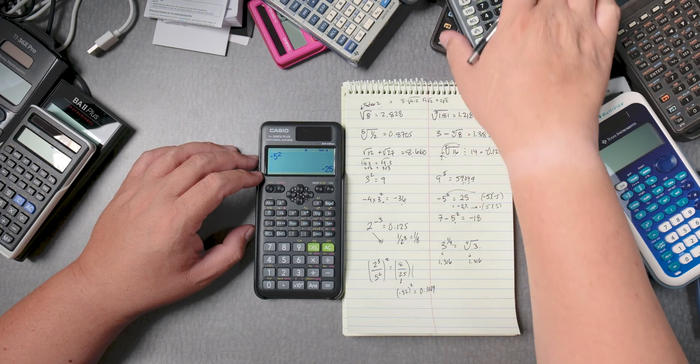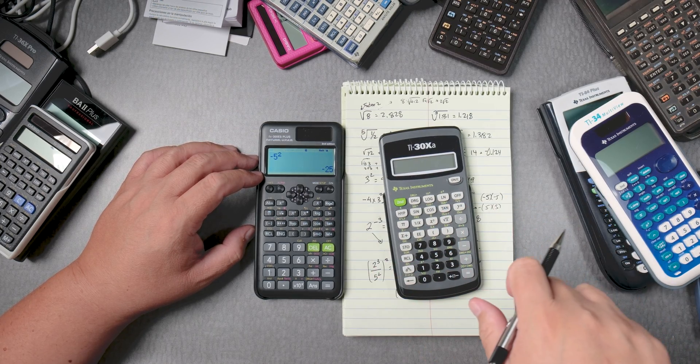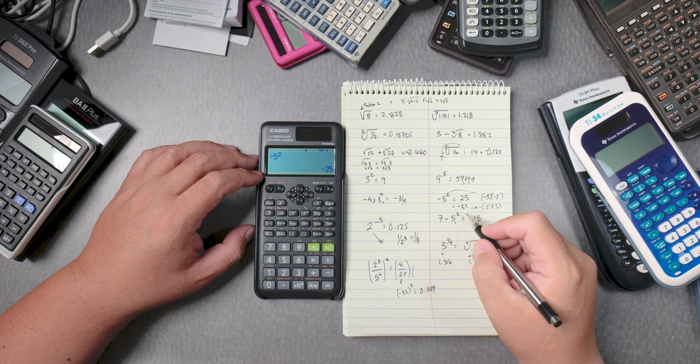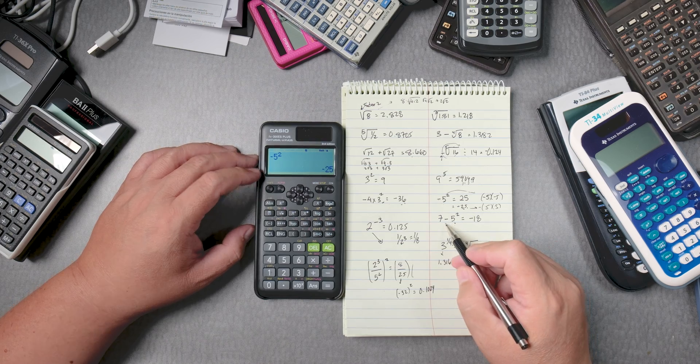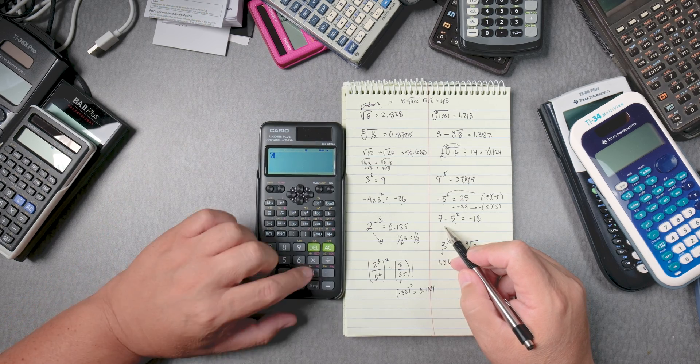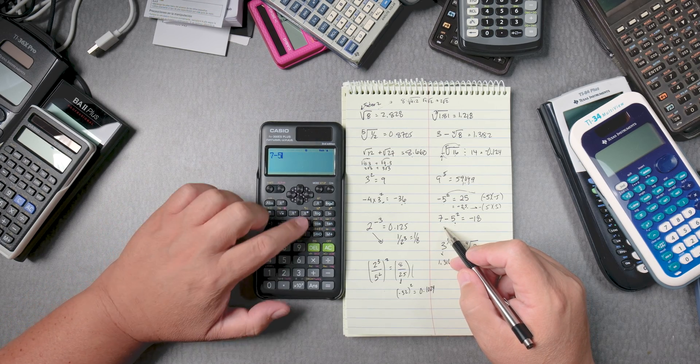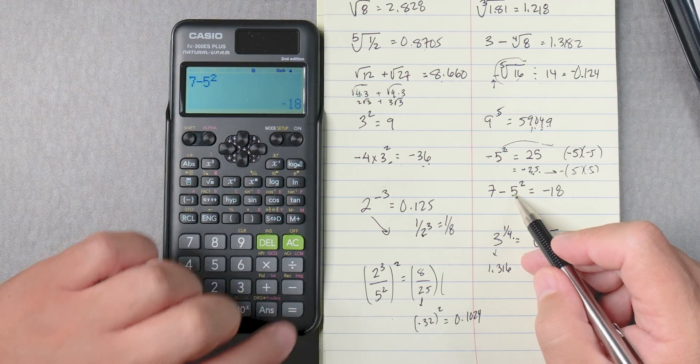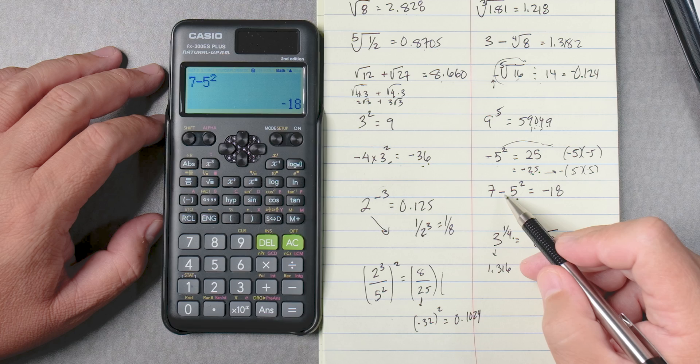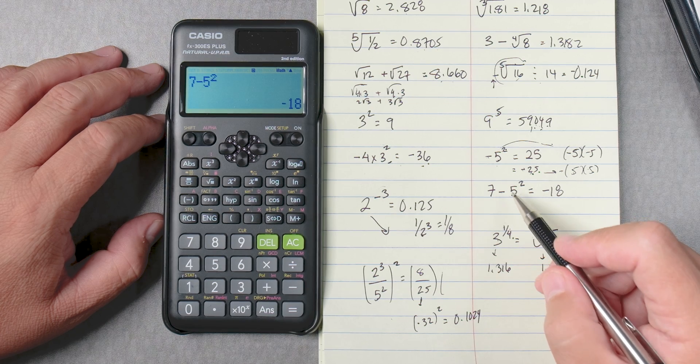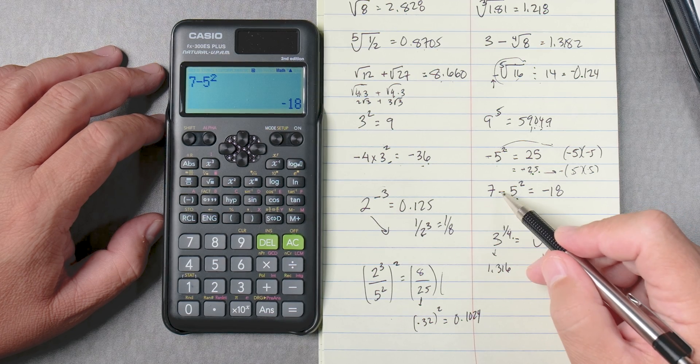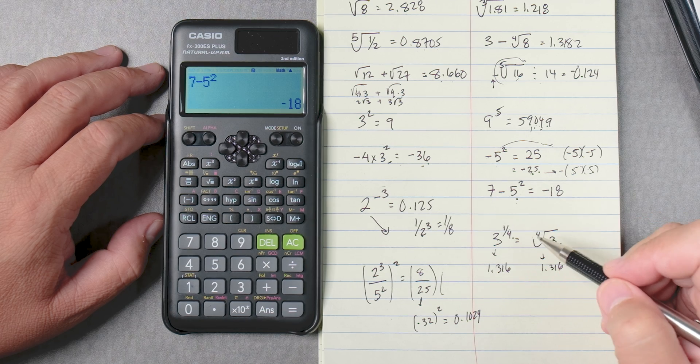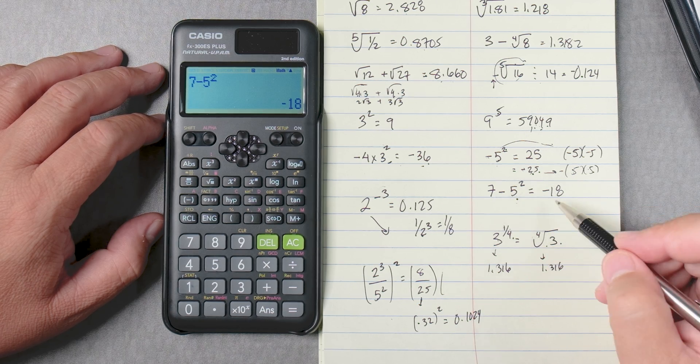Some calculators do that, like this calculator here, the TI-30XA. The algebraic calculators, they calculate it different. Why? Because when you do this one, 7 take away 5 squared, you see that? 7 take away 5 squared. You press equals, it gives you negative 18, because what the calculator is doing, it's saying 5 squared is 25, and it's bringing the negative down. 7 taking away 25 is negative 18. So algebraically, it's doing it that way.